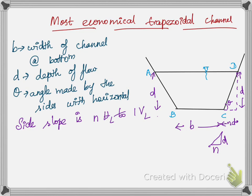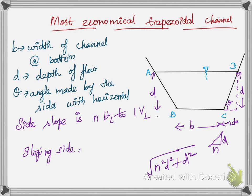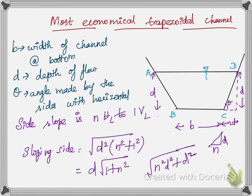For the sloping side, using Pythagoras theorem on the right triangle, the sloping side equals the square root of (n²d² + d²). Taking d² as common gives d·√(n² + 1), so the sloping side is d·√(1 + n²).